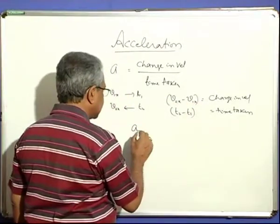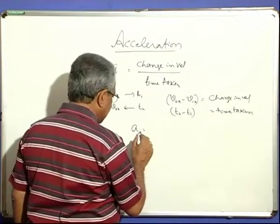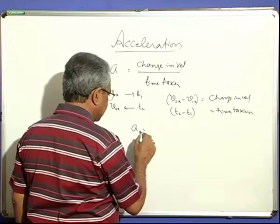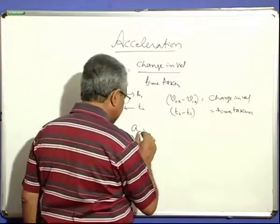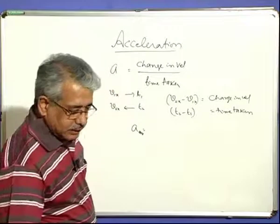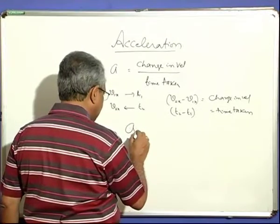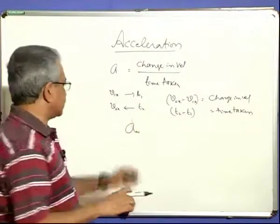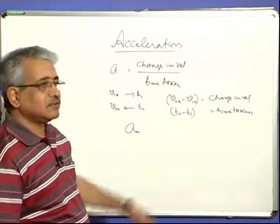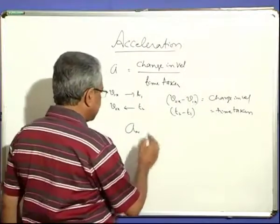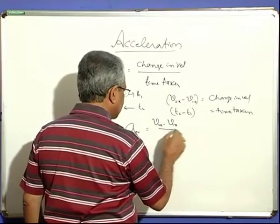Therefore, the acceleration in the X direction is the average acceleration, because we are using the initial velocity at T1 and the final velocity at T2 over an interval. This acceleration — change in velocity by time taken — is what is called average acceleration. Since we are talking about two discrete instances, T1 and T2, this ratio gives average acceleration.